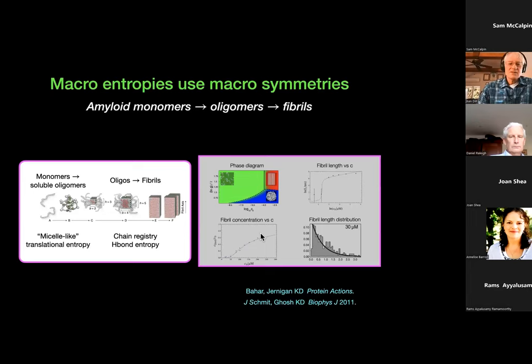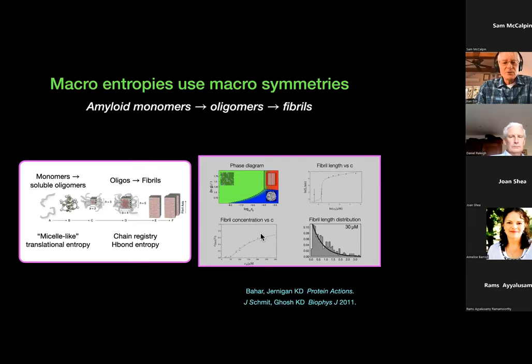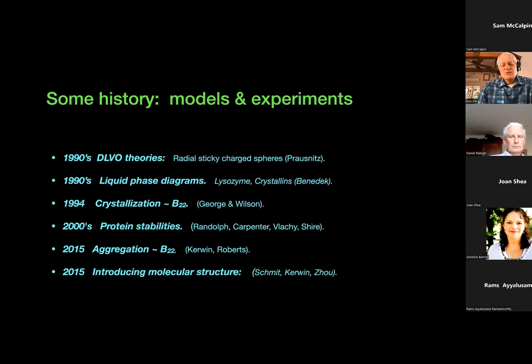What this model doesn't do — and what we wanted to aim for — is to get the microscopic details. There's an interaction energy having to do with hydrophobics coming together in oligomers, and then an interaction energy having to do with hydrogen bonding in the second phase. The basic idea is to use microscopic modeling at a very local level to get interaction energies, and then to allow symmetry-based entropies and steric entropies to be treated by some kind of solution theory or combinatorics.